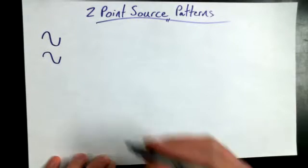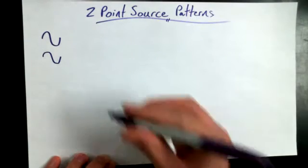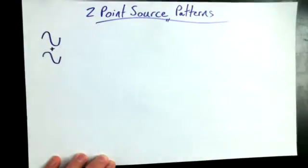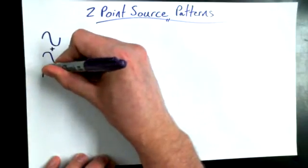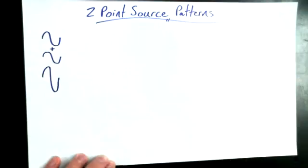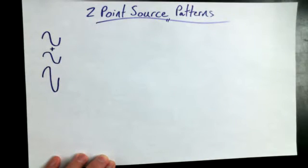Two-point source interference patterns: if you've got two waves and they end up at the same point, like these two waves here, they'd add up to make like a super wave and a super trough. We call it constructive interference.